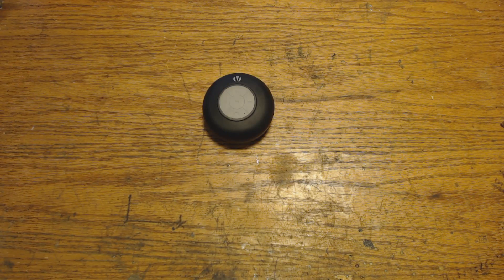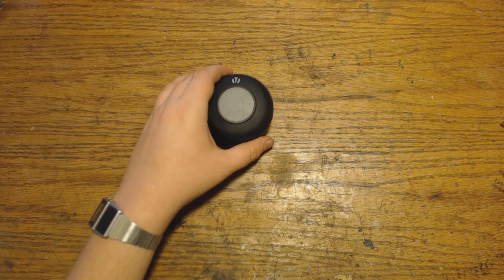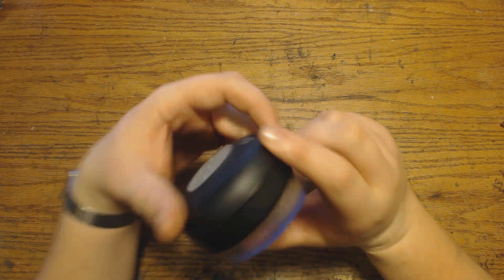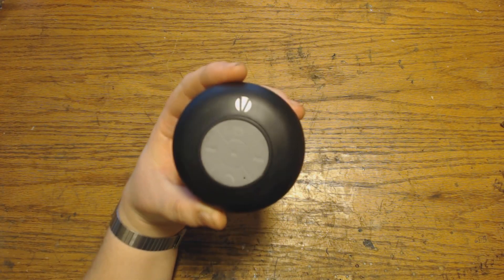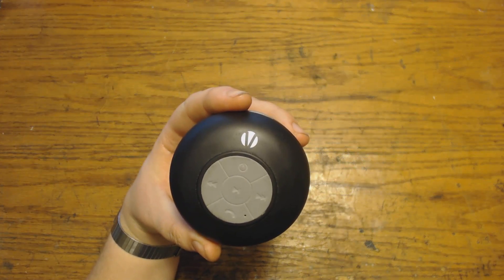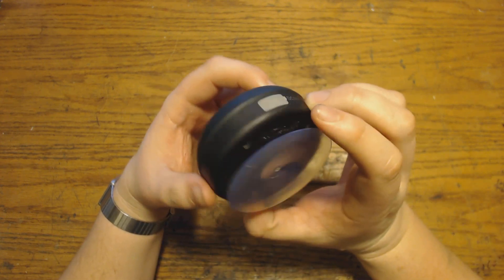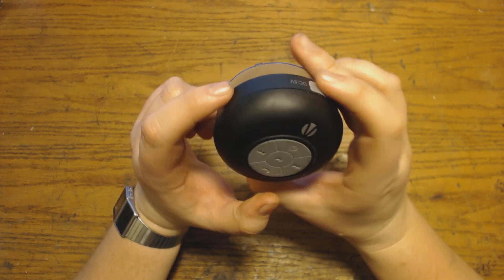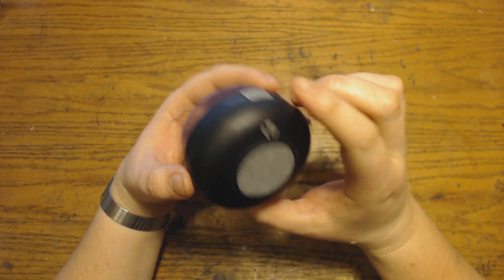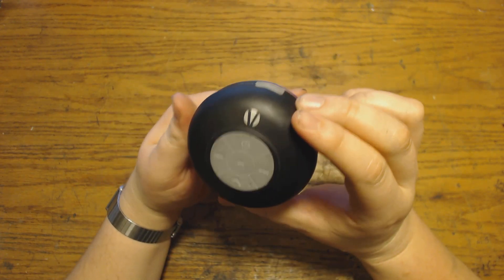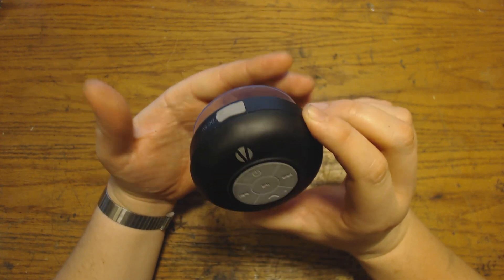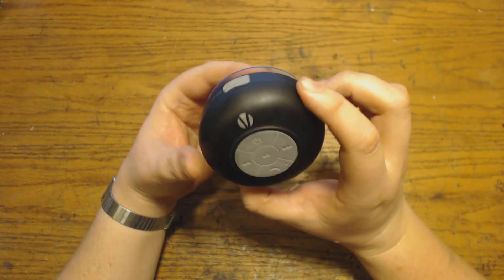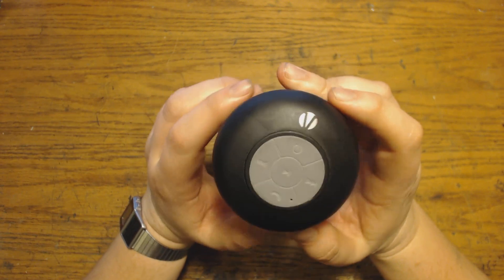Greetings, Skytech here once again with another teardown video. This one is going to be on the Vivitar Bluetooth speaker. I purchased this about a year ago from a local Sears here. This speaker is marketed as a shower speaker. It's supposed to be waterproof to a point and it's got a nice big suction cup on the back here so it can attach to the wall of your shower. You can listen to your tunes while you get all nice and clean.